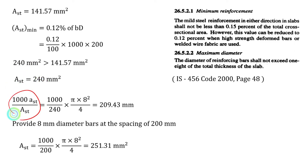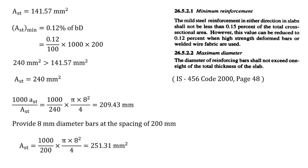Using the spacing formula, we can find the spacing. We have decided to use 8 millimeter diameter bars, so the area of one bar is pi by 4 into 8 squared, which gives 50.27 millimeter square. The spacing works out to approximately 200 millimeter. The area provided is 1000 upon 200 into 50.27, giving 251.31 millimeter square.